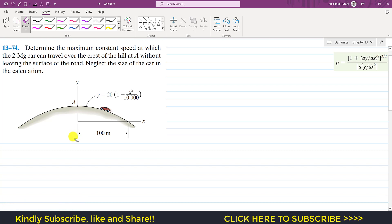Now we are going to solve this problem which says determine the maximum constant speed at which the 2 megagram car can travel over the crest of the hill at A without leaving the surface of the road. Neglect the size of the car in the calculation.